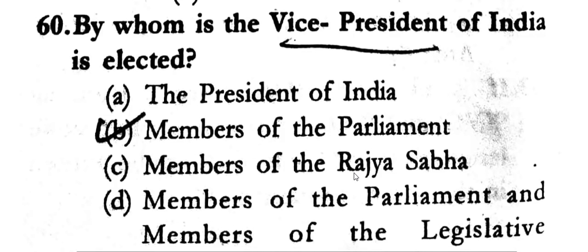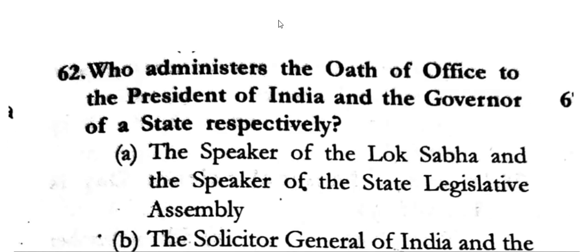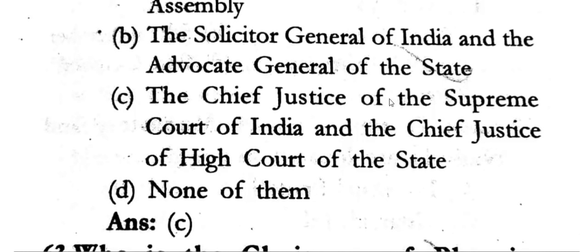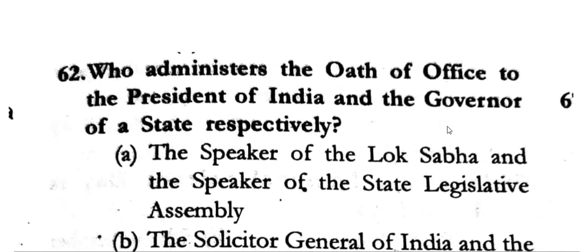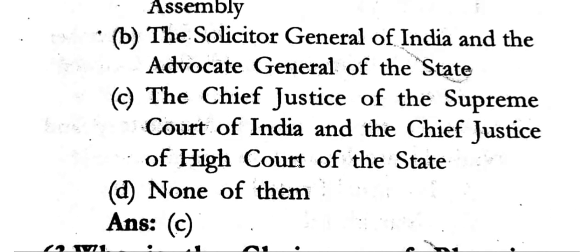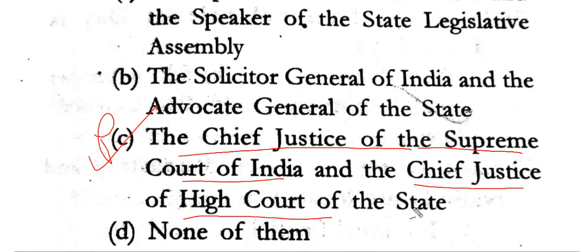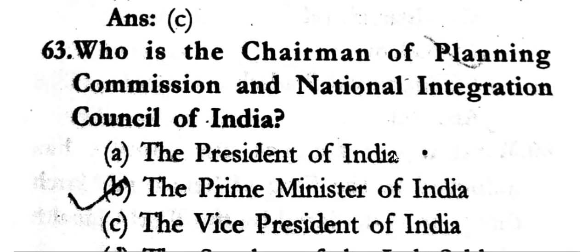The Vice President of India is elected by members of Parliament. Who administers the oath of office to the President of India and the Governor of a state respectively? The answer: the Chief Justice of the Supreme Court administers the oath to the President, and the Chief Justice of the High Court administers the oath to the Governor.